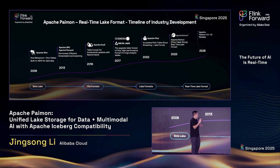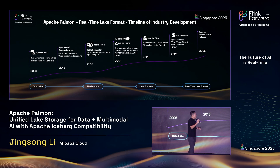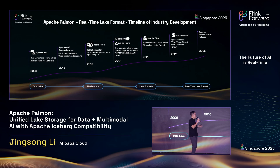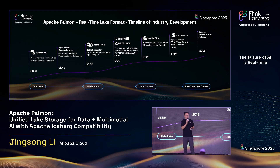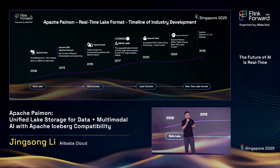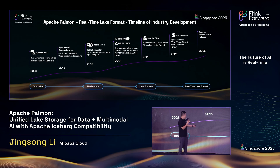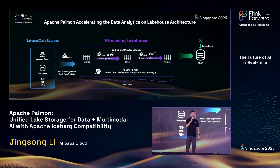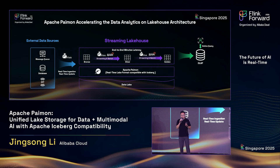Apache payment is a real-time lake format. The lake format of Apache payment also has very good integration with Hive, with Spark, with other engines, with Trino, with Darrox, with Doris. Now Apache payment has released versions 1.0 and 1.2 — very stable versions you can use at very large scale. You can see the timeline of industry development from data lake, the file format evolution, and the lake format evolution, and the real-time lake format evolution.